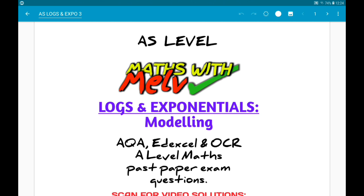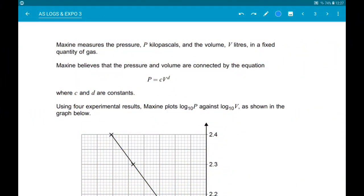Alright, let's do this. Okay then, first up: Maxine measures the pressure P in kilopascals and volume V in liters in a fixed quantity of gas. She believes the pressure and volume are connected by the equation P equals C V to the T, where C and T are constants.